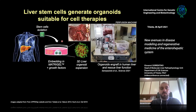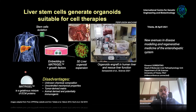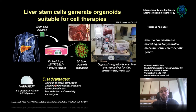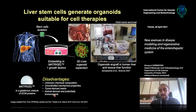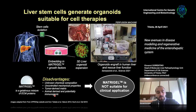However, this protocol cannot be used directly in clinical trials because it relies on Matrigel, which has major drawbacks: its chemical composition is totally unknown, its mechanical properties cannot be controlled, and it is a tumor-derived matrix from a mouse sarcoma — potentially dangerous and immunogenic. For these reasons, Matrigel is not suitable for clinical application.